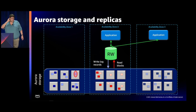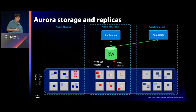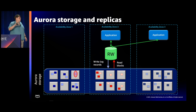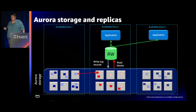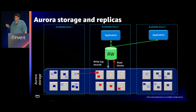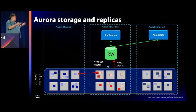If we lose a 10-gigabyte segment, at the scale of the Aurora storage network this happens all the time. Maybe that 10-gig block got corrupted — a CRC check failed. We have six copies of your data, so if one gets corrupted we grab another copy from somewhere else, preferably the same AZ, and make a replacement copy of that 10-gig segment. We self-repair. Because you only need four out of six to commit and get quorum, it has no effect on availability — you're still at five out of six. We repair it and you never know what happened. It just self-heals.